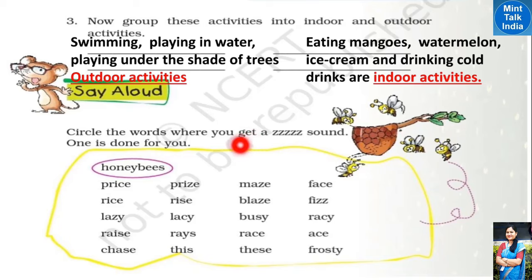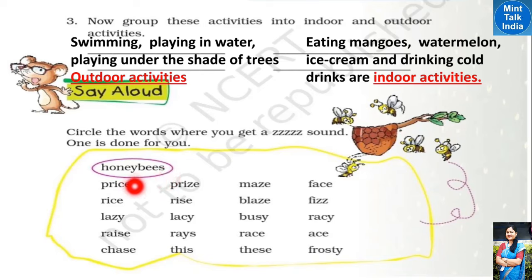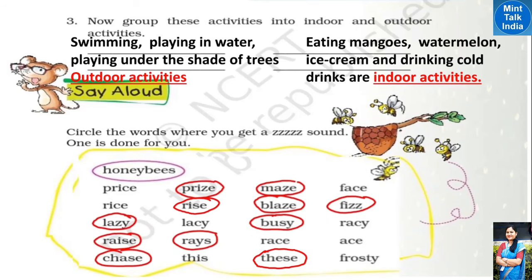Next is 'Say Aloud.' You have to circle the words where you get a Z sound. Like in 'honeybees' — we get a Z sound at the end. Pronounce each word and find where the Z sound appears. We find the Z sound in: price, rice — but wait, in these two words it is actually an S sound.